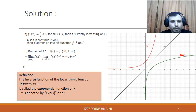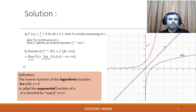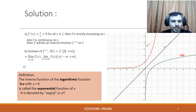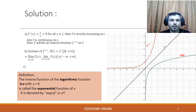We want to prove that the function f admits an inverse function. The derivative of ln(x) is 1/x, which is always positive, so f is strictly increasing. And we know that the function ln(x) is continuous on its domain. Then the function f admits an inverse function on i.